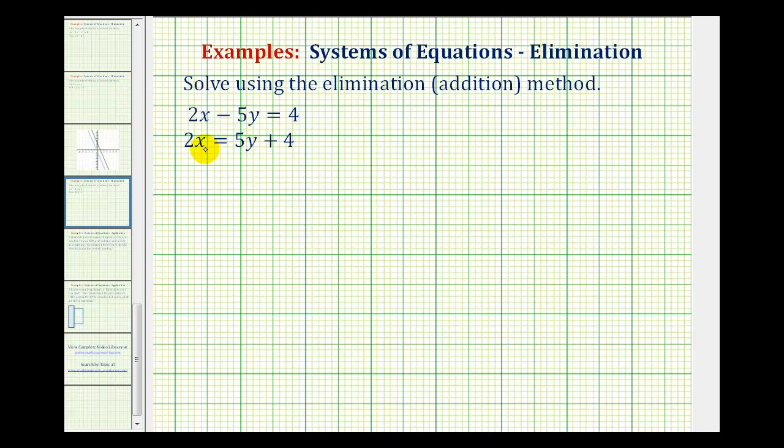Well if we want the sum of the x terms or y terms to be zero, either the x terms or y terms must be opposites. So the first step in using the elimination method is to put the two equations in standard form, meaning we want the x terms and y terms on the left and the constant on the right.